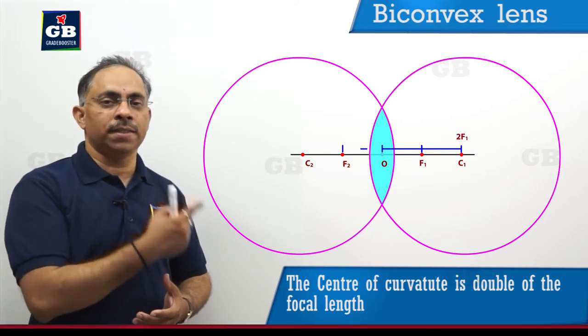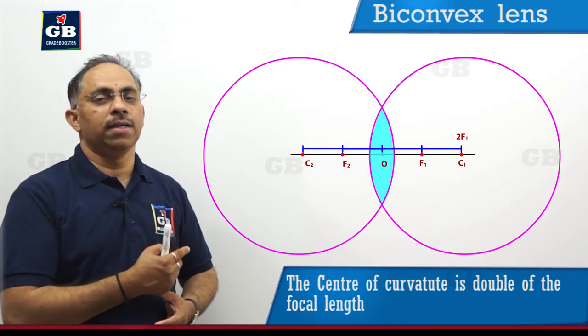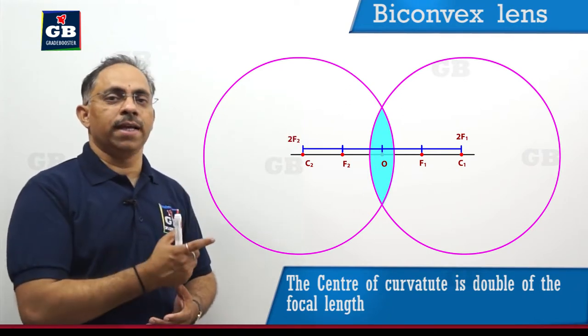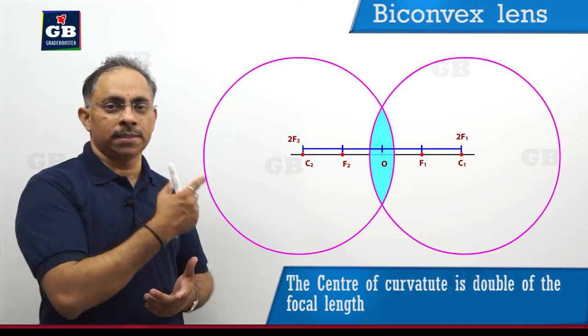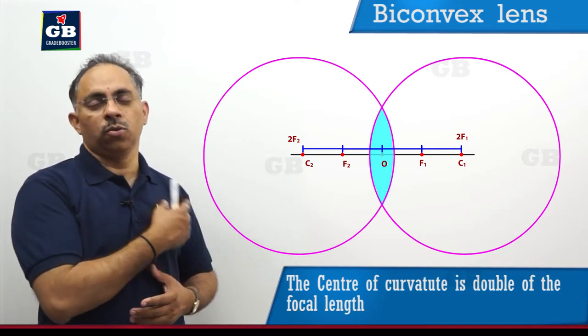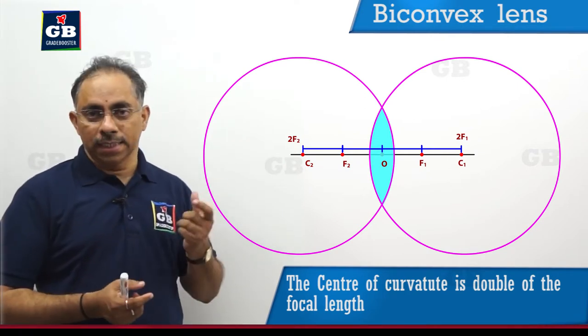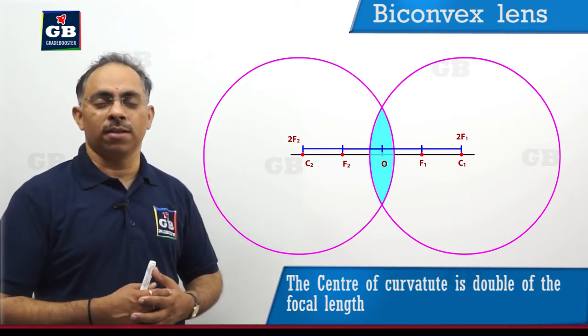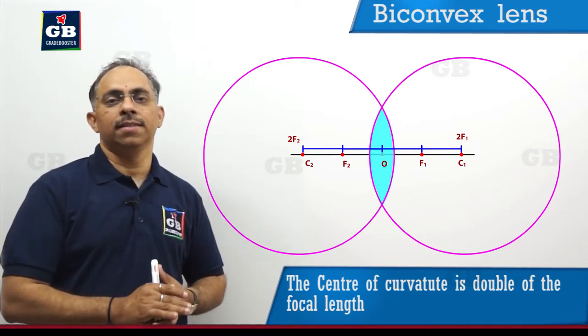Similarly, the distance between optic center O and the principal focus F2, if I double the distance, we will get another point 2F2. Twice the focal length will be the distance between the optic center O and the position 2F2. Now, this distance focal length depends upon the curvature of the particular lenses.